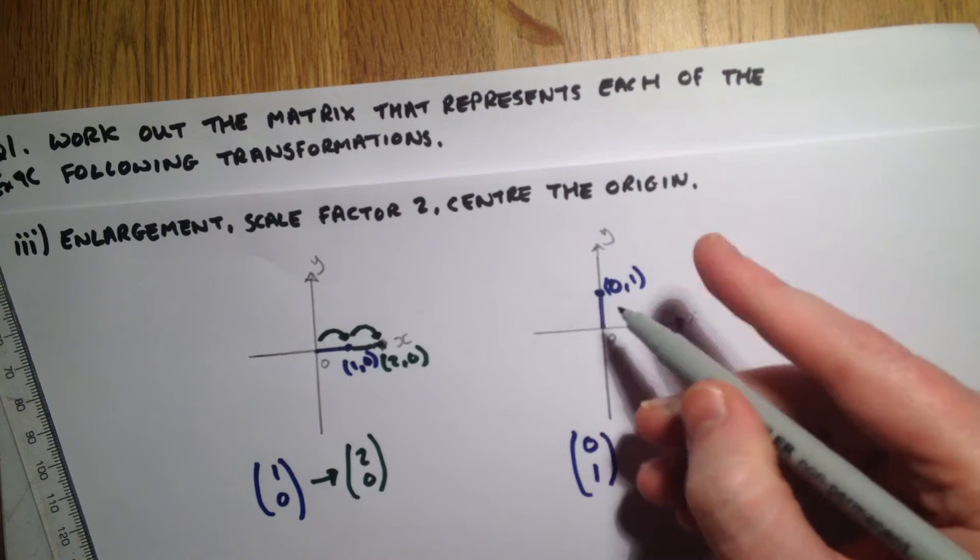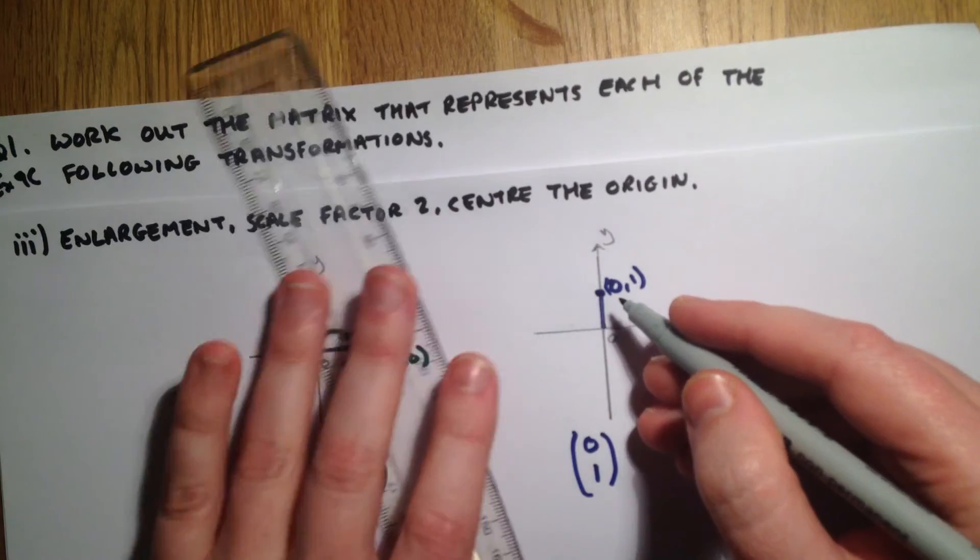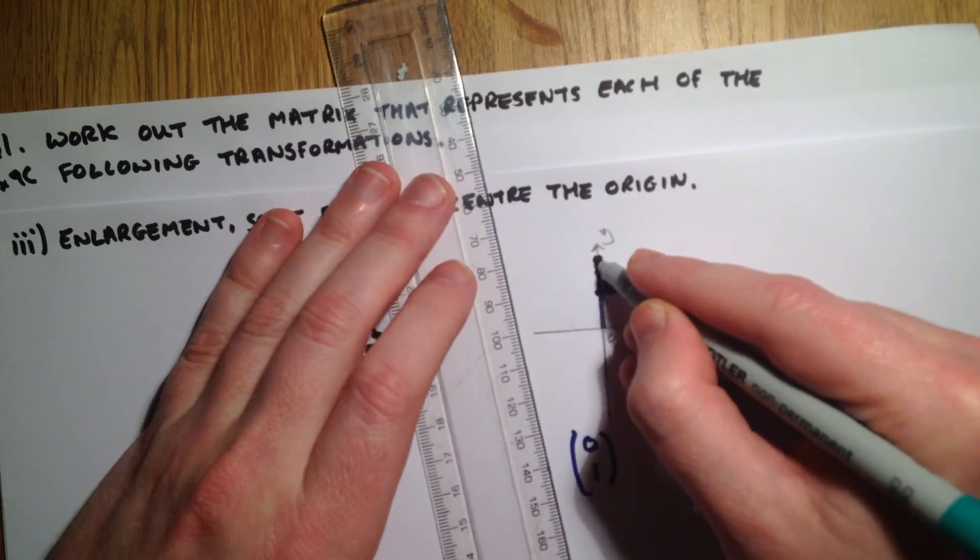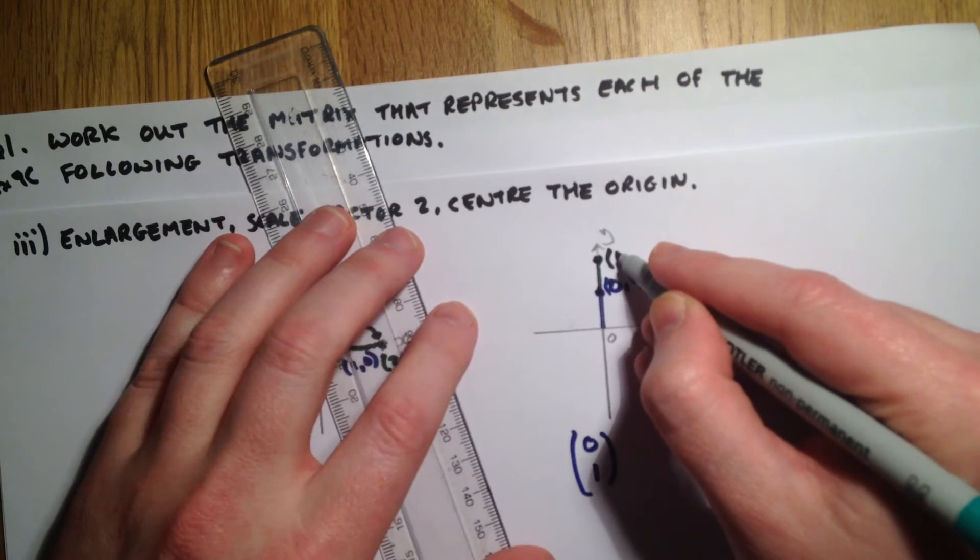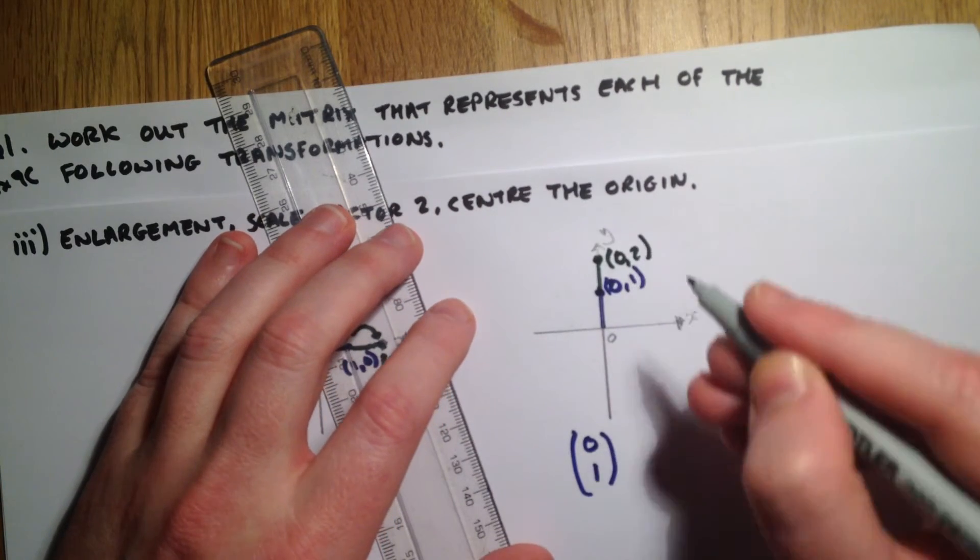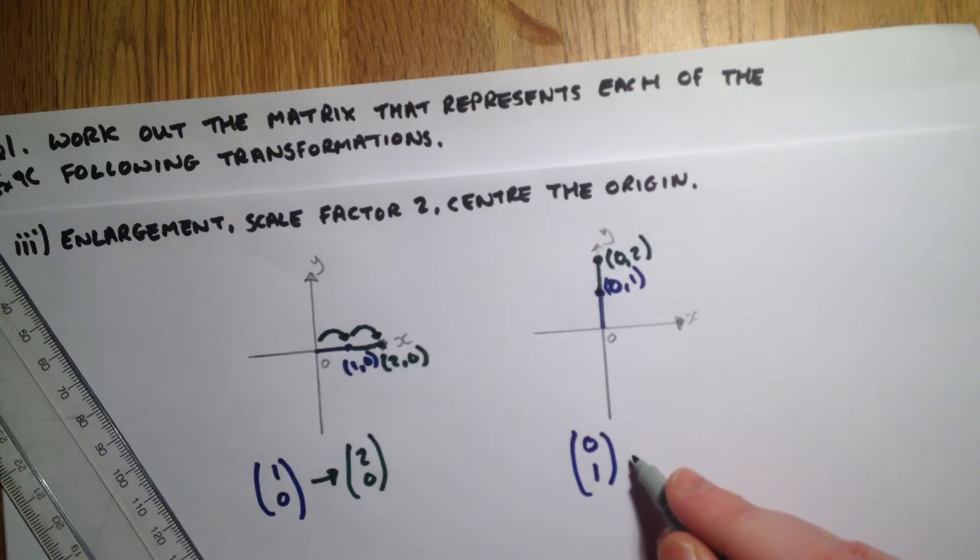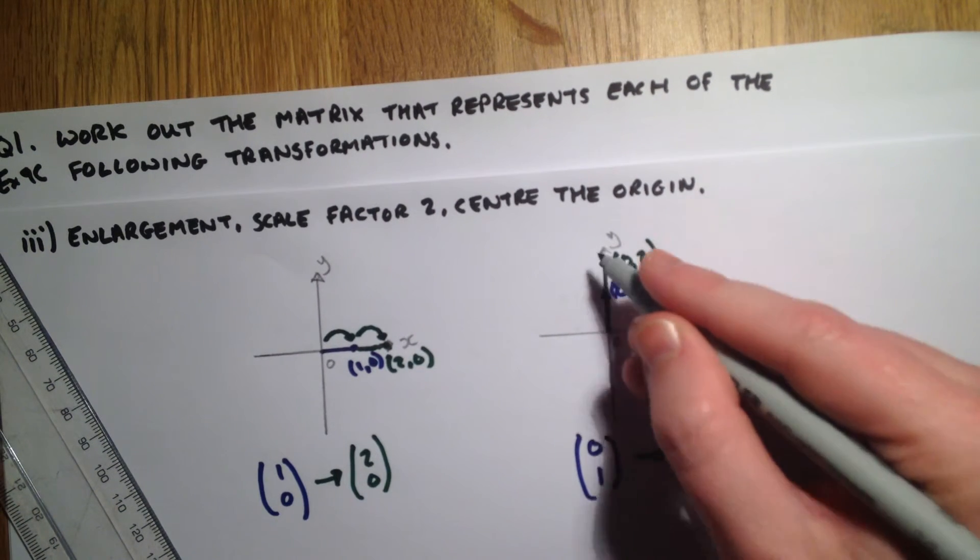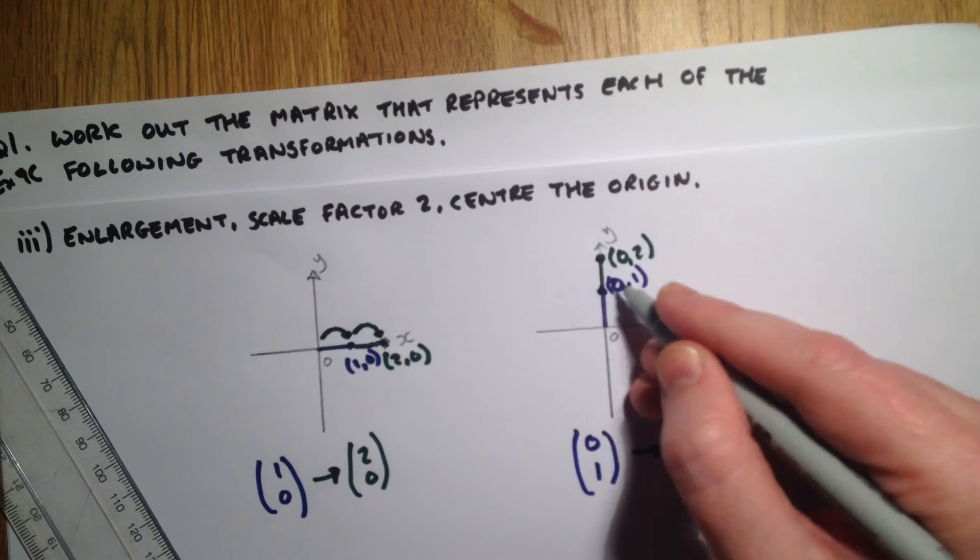On this one, everything is getting twice as far away, so we get twice as far away in every single direction. This is precisely the same - rather than being (0,1), it's going to become (0,2). So this vector here, rather than being one up, it's going to go two up. This doesn't really look to scale.